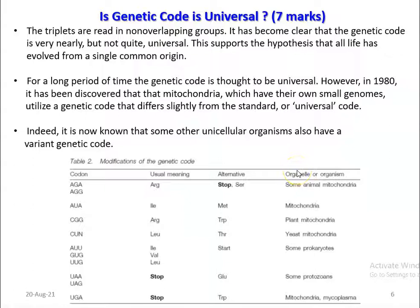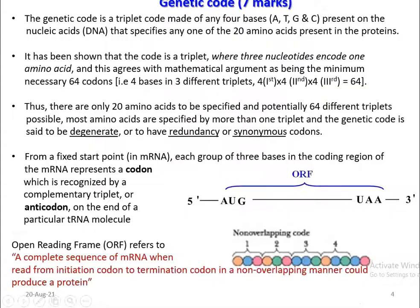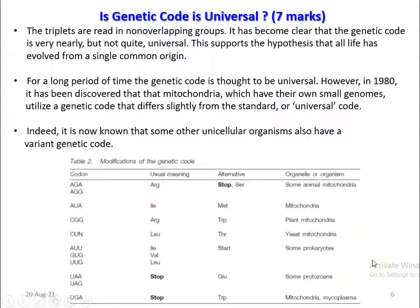The next important property of the genetic code is that it is universal — again a 7 or 10-marks question in the semester examination. The triplets in the mRNA are commonly read in a non-overlapping way. It has become clear that the genetic code is very nearly, but not quite, universal. The genetic code is not exactly the same across all living organisms, which supports the hypothesis that life evolved from a single common origin but diversified over time, leading to some small changes in the genetic code.